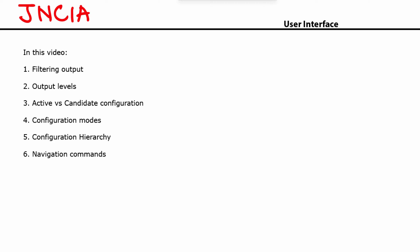In this video, we're going to look at six different topics. We'll understand the commands to filter the output given by the device. We'll understand the different levels of output. We'll understand the differences between active configuration versus candidate configuration. We'll also talk about the different configuration modes, the configuration hierarchy, and finally some navigation commands. Let's begin.